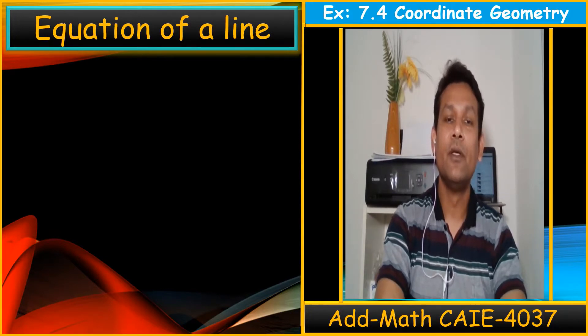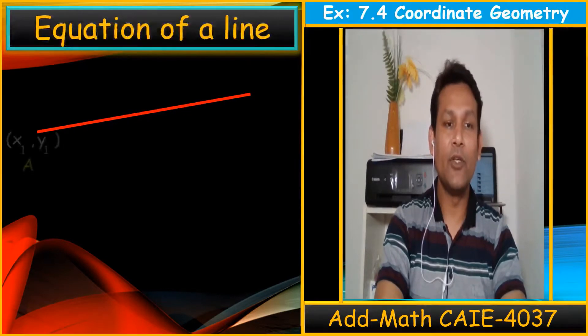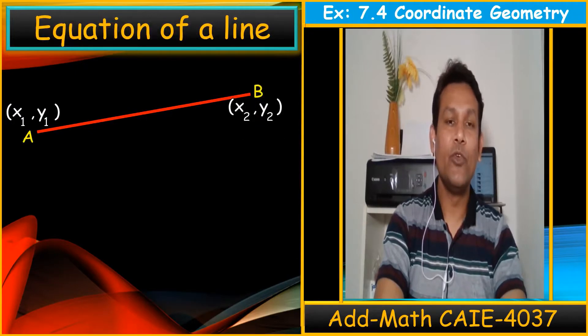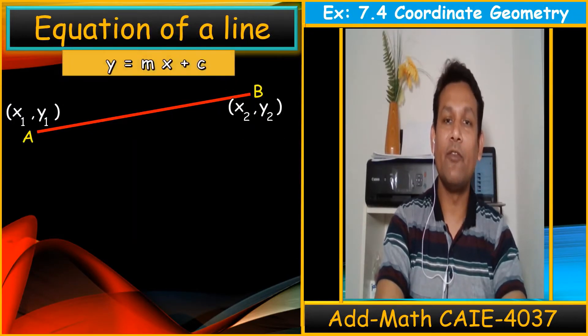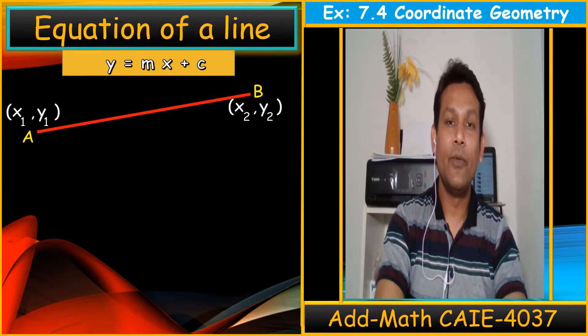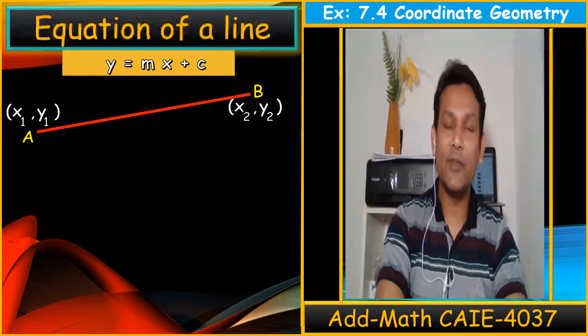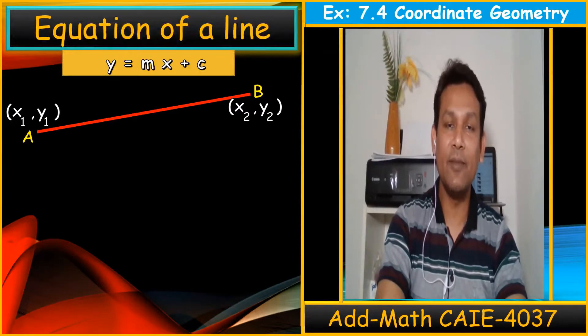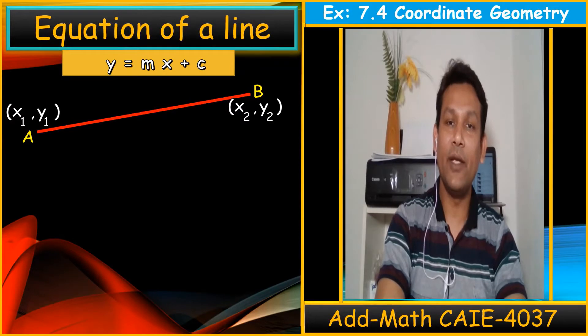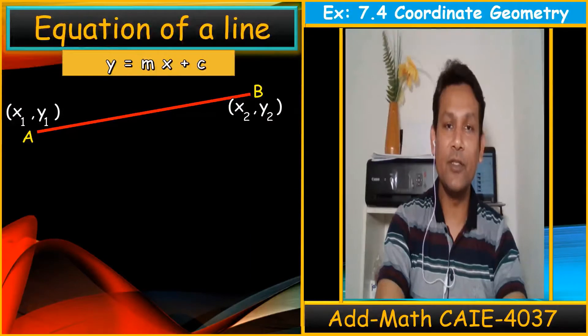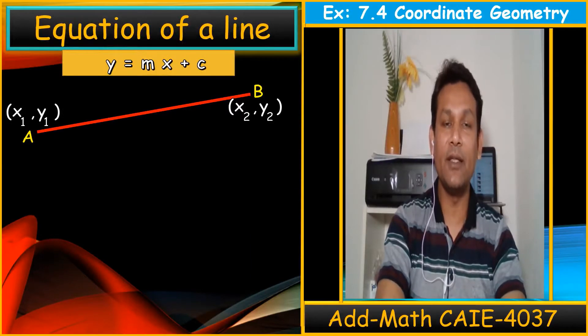Normally when we have a straight line with coordinates A and B, which formula do we use? We use y equals mx plus c. Remember, this formula y equals mx plus c is normally used in syllabus mathematics, where m is the gradient and c is the y-intercept. In this equation, we normally find the gradient first, then find the y-intercept c, and then we put m and c in the equation to get the answer.